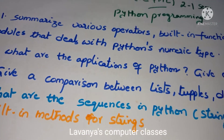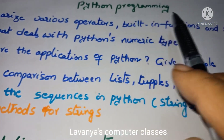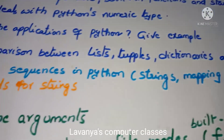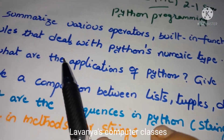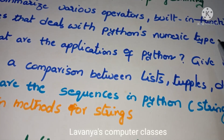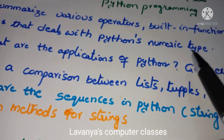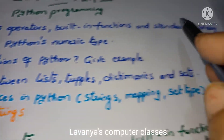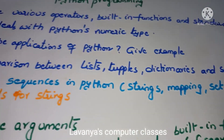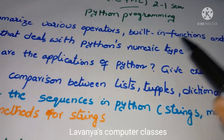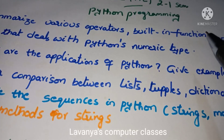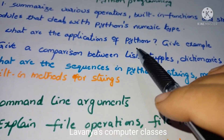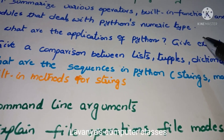The first question is: summarize various operators, built-in functions, and standard library functions that deal with Python's numeric types. There are many numeric types, so understand what the various operators, built-in functions, and standard library functions are. The second important question is: what are the applications of Python? Give examples of where we are using Python.